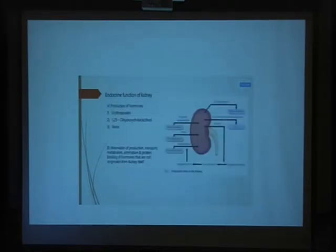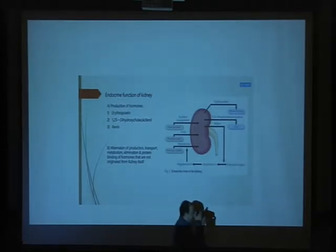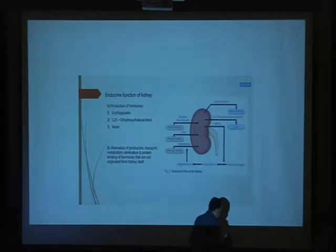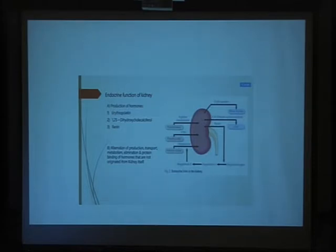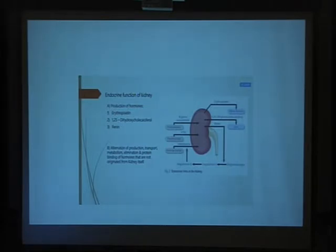What about the endocrine function of the kidney? The kidney secretes many important hormones, like erythropoietin, renin, and 1,25-dihydroxyvitamin D — the active form of vitamin D. The kidney also plays another important role in glucose homeostasis.